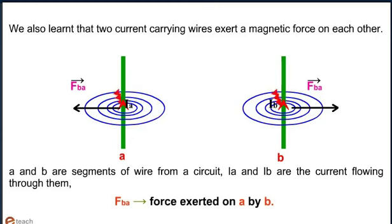We can see that Fba is exerted on A by B. Fab is the force exerted on B by A. The direction of these forces is determined by right hand rule.